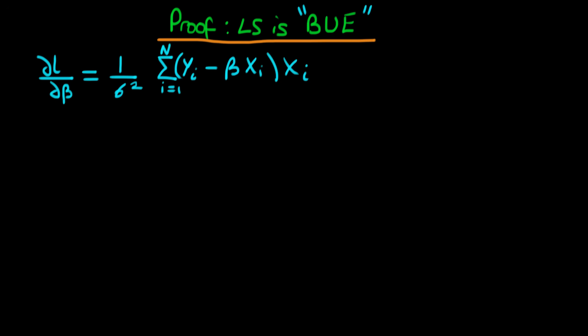At the end of the last video we derived the derivative of the log likelihood with respect to the parameter beta, and we have that expression here. To obtain the asymptotic distribution of maximum likelihood estimates of linear regression models we need to work out the information matrix, and for this particular model we have two parameters: beta and sigma.